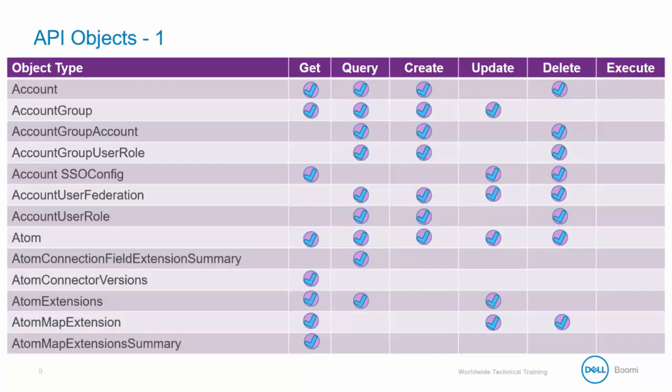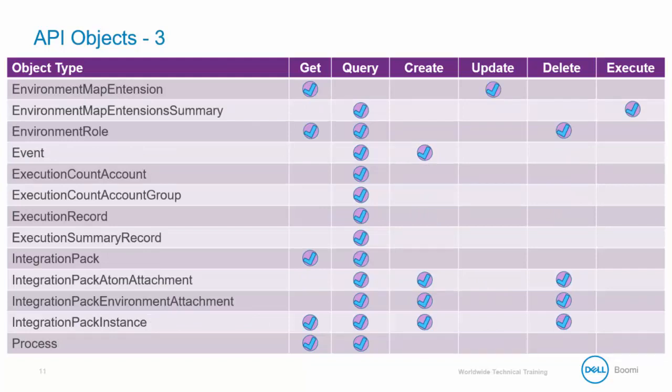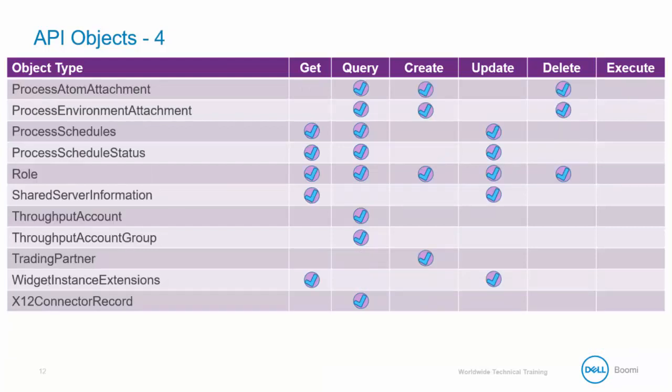Not every method is available for every object, and there are a lot of objects — in fact, four slides worth. You can see methods for accounts, atoms, extensions, custom tracked fields, deployment, and environments. Slide three shows more environment objects along with execution and the start of the process object, and slide four continues with the process object and more. All of this information is available in the user guide — just search for API objects to see all this data in much more detail.